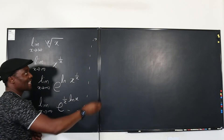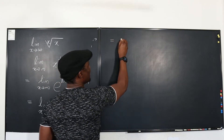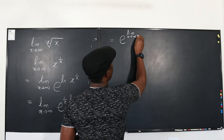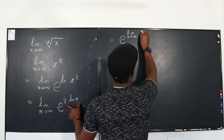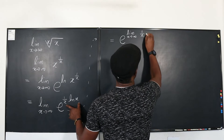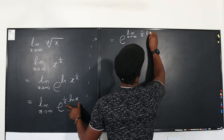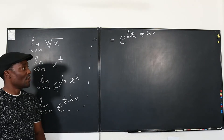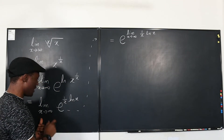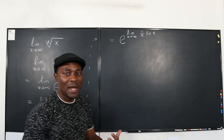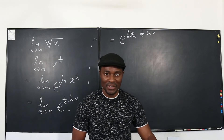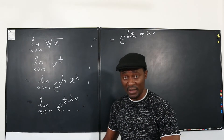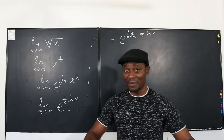I can rewrite this expression as E raised to the limit as X goes to infinity of one over X times ln of X. I've moved the limit inside, telling myself that the limit of a function is the function of the limit — I say that so I can always remember. The limit of a function is the function of the limit, as long as the limit is not affecting a constant.